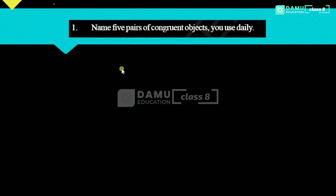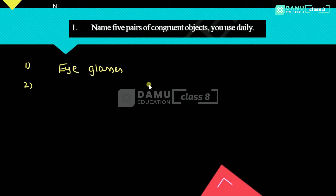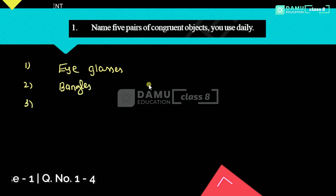Our first question is: name 5 pairs of congruent objects you use daily. For this, you can write any 5 pairs. For example, eyeglasses — practical glasses — are congruent to each other.